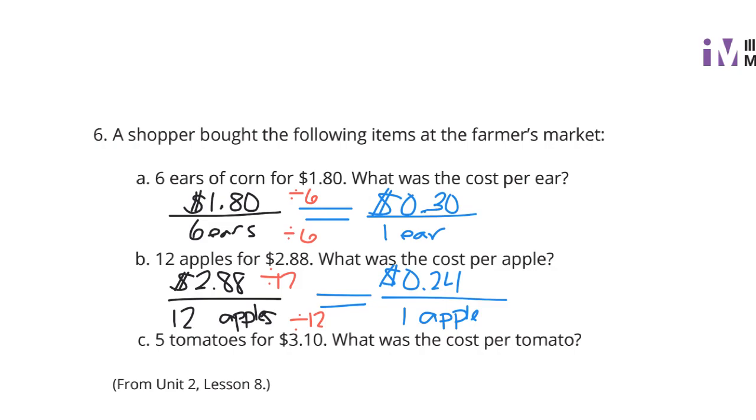5 tomatoes cost $3.10. What is the cost per tomato? Probably can't sing much more than that, or I'll get a copyright violation. Anyhow, 1 tomato. If I could spell tomato, T-O-M-A-T-O. If we divide by 5, and then divide the $3.10 by 5, we will end up with $0.62 for the 1 tomato.